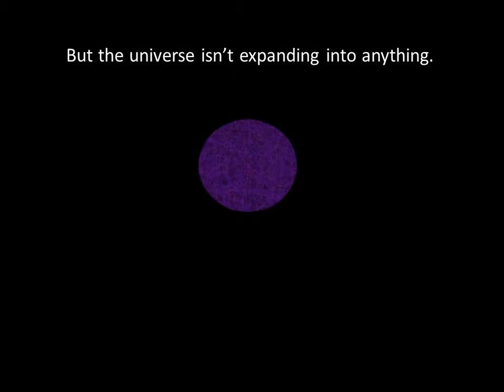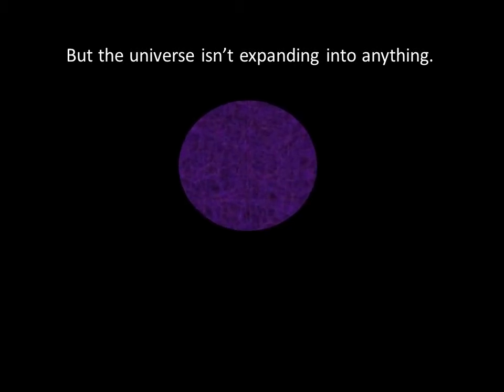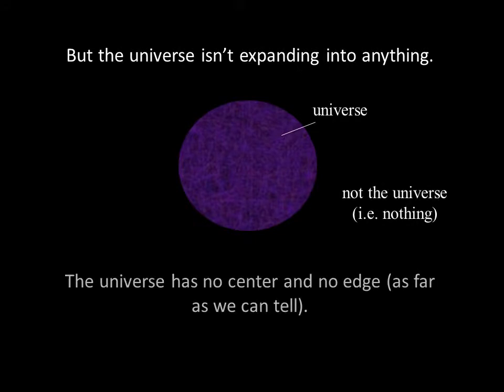But the universe isn't expanding into anything. There's the universe, and that's it. What's worse yet for our brains to think about is that the universe doesn't appear to have a center or an edge. The distribution of galaxies appears to be relatively smooth, meaning that no matter where you look or where you live in the universe, the overall appearance of the universe is the same.